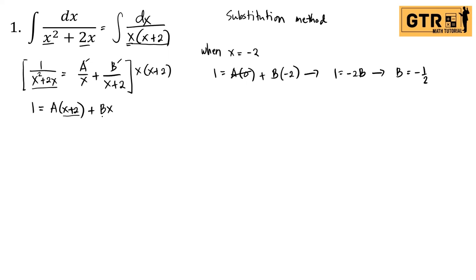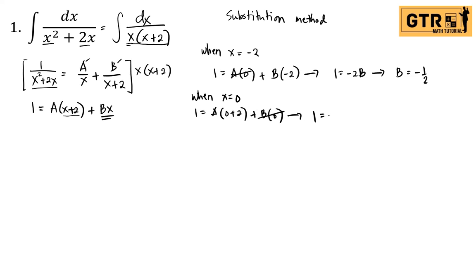Next, to eliminate B, we substitute X equals 0 so that the BX term becomes 0. Substituting 0 for every X: 1 equals A times 0 plus 2, plus B times 0. Therefore 1 equals 2A, and dividing both sides by 2, A is equal to 1 half.